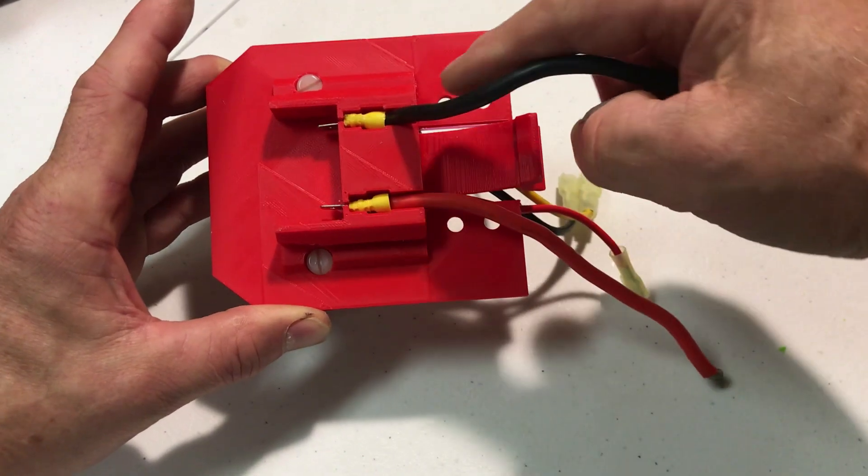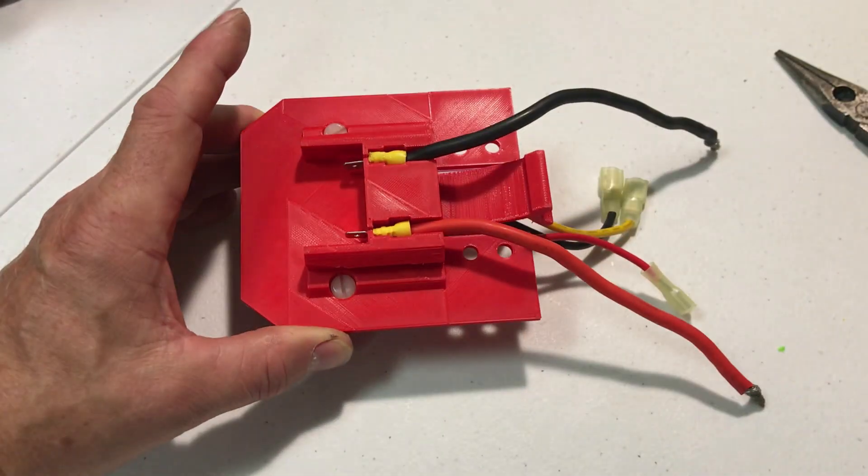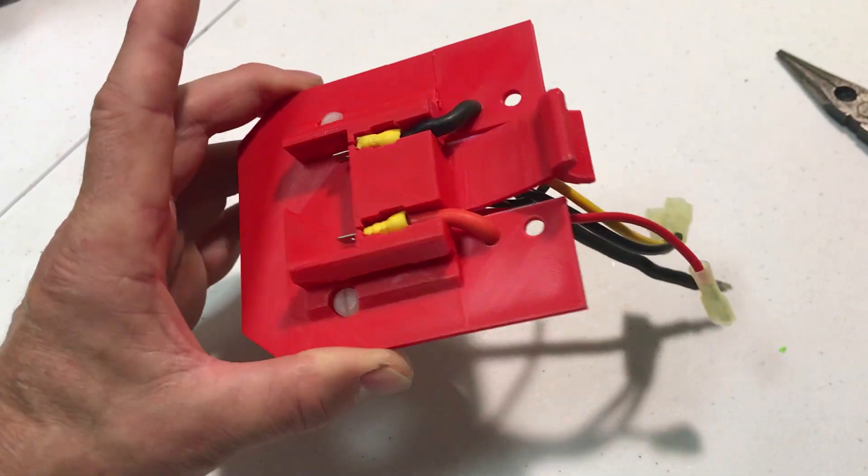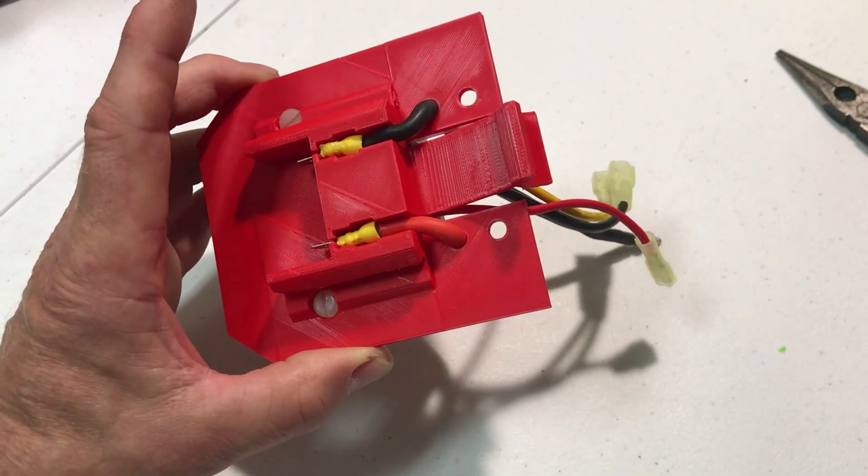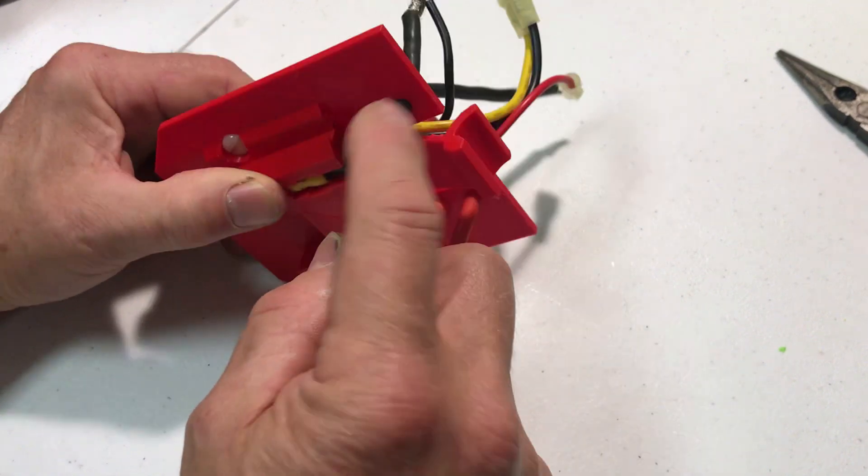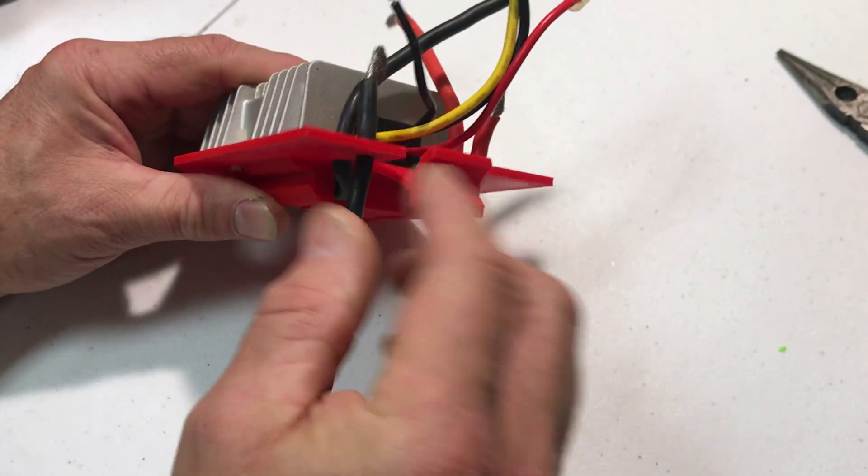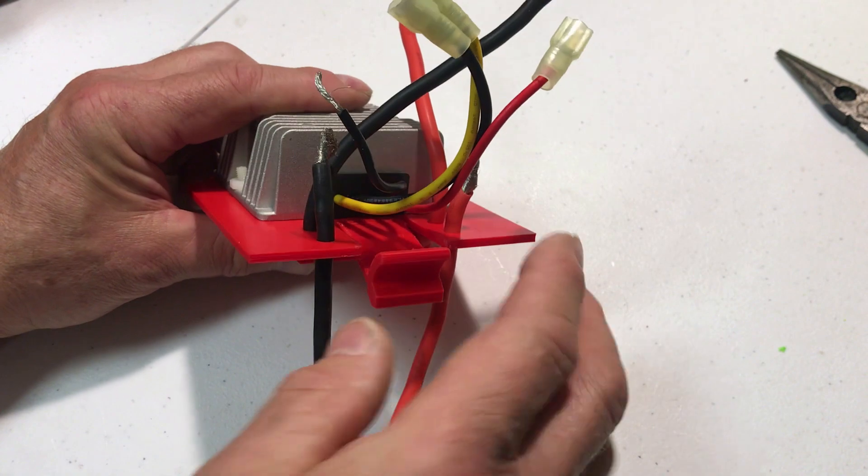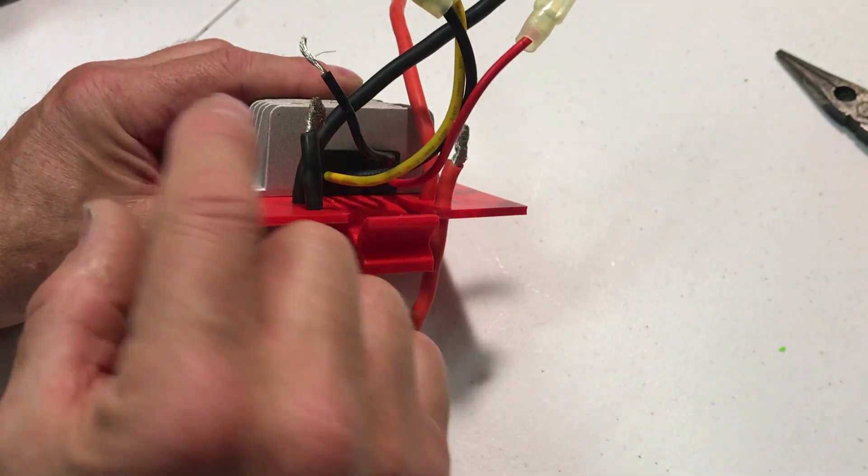And then these wires are going to go through these holes here. Now I've taken some long lead wires and put them through these other set of holes and we'll go ahead and start assembling the compartment that holds the socket and the switch.